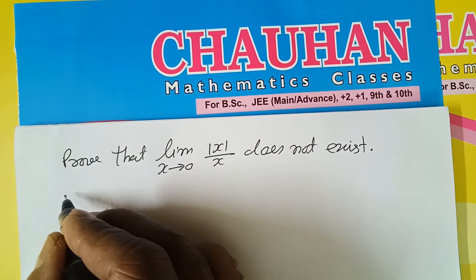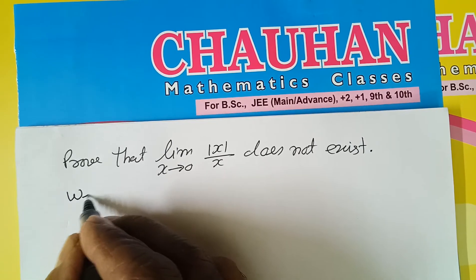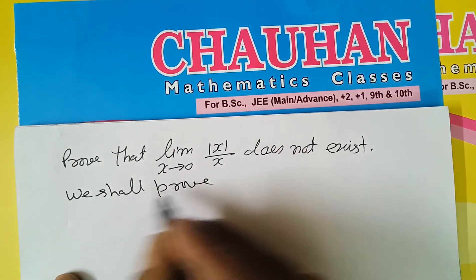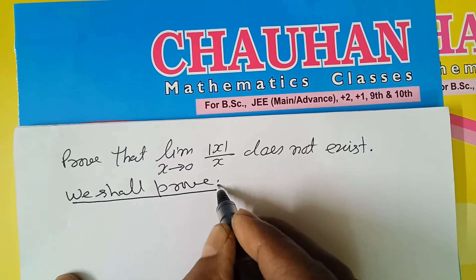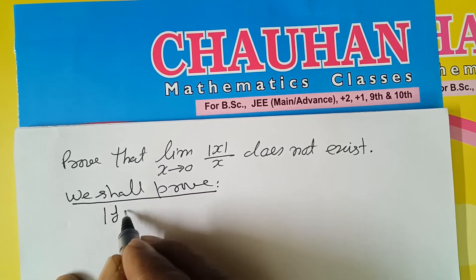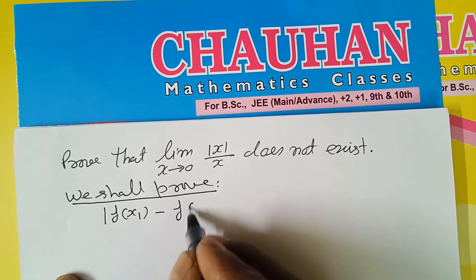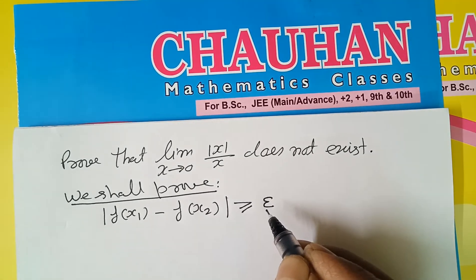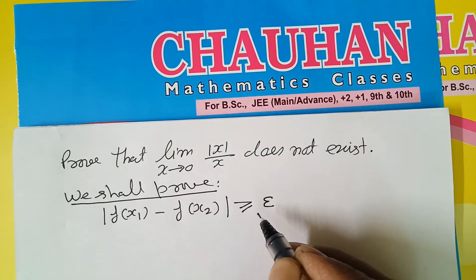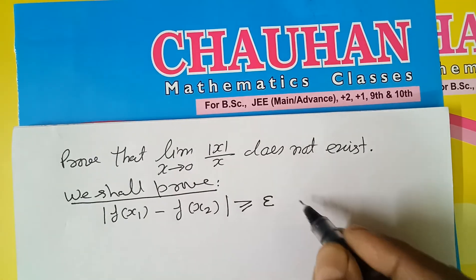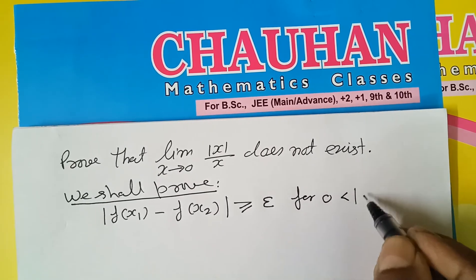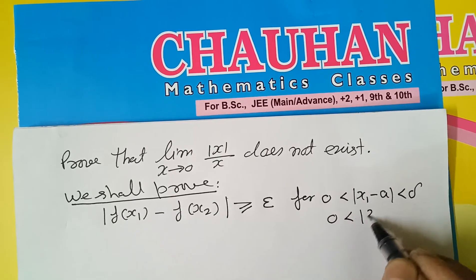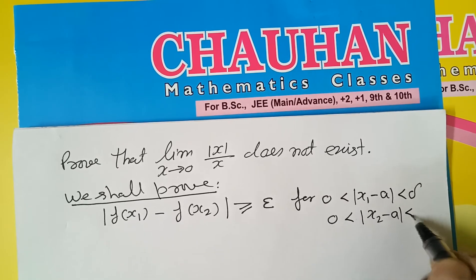So, what we will use — we will prove that mod f(x1) minus f(x2) is greater than or equal to epsilon. If this is less than epsilon, then limit exists; and if this is greater than epsilon, then limit does not exist. This is for 0 less than mod x1 minus a less than delta, and 0 less than mod x2 minus a less than delta.